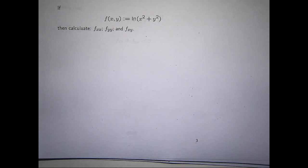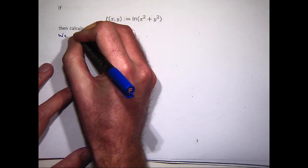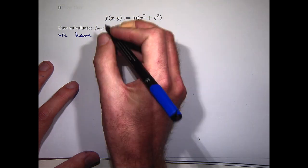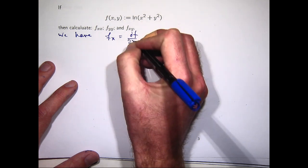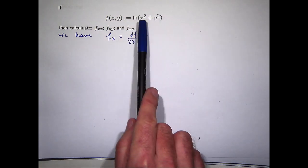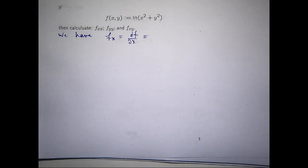There is a quick way of doing this problem, at least for the first-order derivatives. If you wanted to calculate df/dx or f sub x, you would basically take the partial derivative of what's in the bracket, bring it to the front, and then multiply by the derivative of log of whatever's in the brackets. The derivative of log u is 1/u, so you just replace u with something like x squared plus y squared.